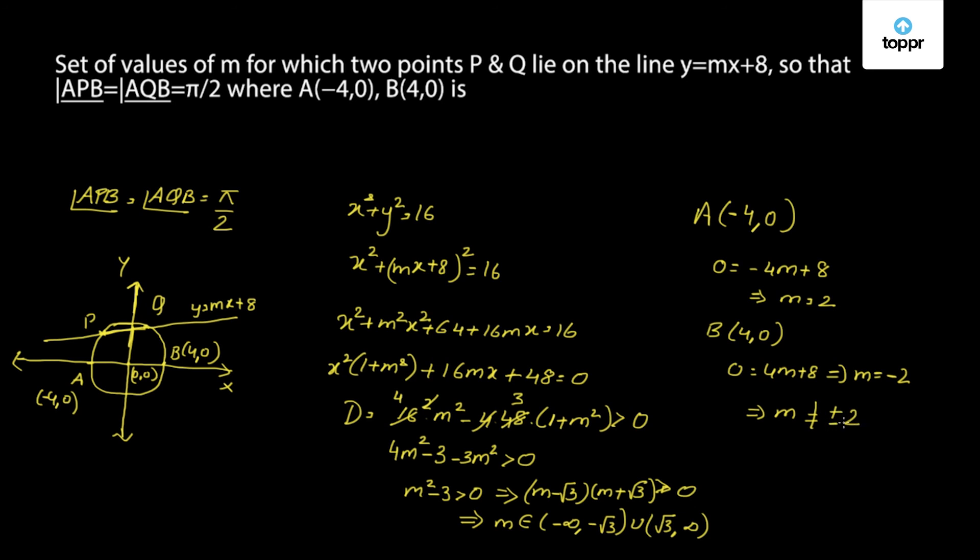So m cannot be equal to ±2, as they represent or denote the points A and B. Hence the final interval of m would be m belongs to (-∞, -√3) union (√3, ∞), excluding the values -2 and 2. So this will be the set of values of m.